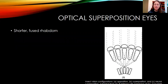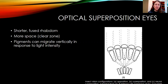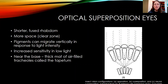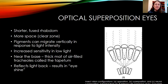The optical superposition eye is different still. The rhabdoms are fused, but the eyes are shorter and there's more space — a clear zone inside the omatidia — and pigments are allowed to migrate vertically in response to light intensity, moving up and down. This is another way of increasing sensitivity in low light. Near the base of these eyes, there's a thick mat of air-filled tracheal space called the tapetum. The tapetum is what causes eye shine — like when you photograph a cat outside at night and its eyes glow green. Some insects have that as well.